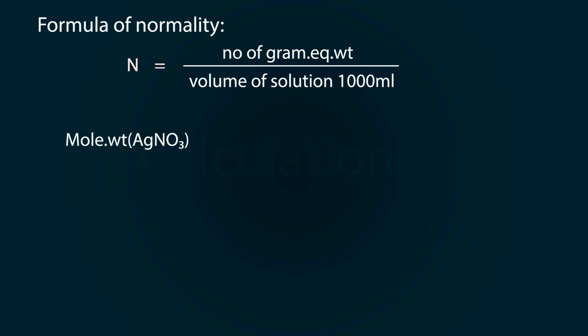Let's do some calculations. First of all, we have to find the normality which is equal to number of gram equivalent weight divided by volume of solution which is 1000 ml. So the molecular weight of silver nitrate is 107.87 for silver plus 14 for nitrogen plus 3 into 16 for oxygen.